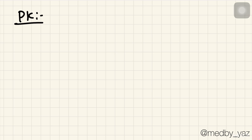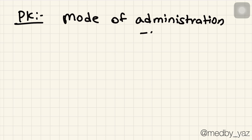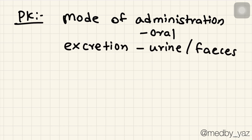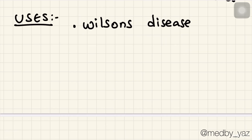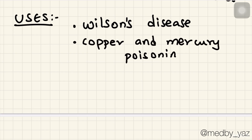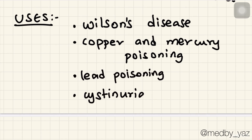Pharmacokinetics: penicillamine is administered orally and excreted through urine or feces. It is used in Wilson's disease, copper and mercury poisoning, lead poisoning, cystinuria and cysteine stones, and scleroderma.